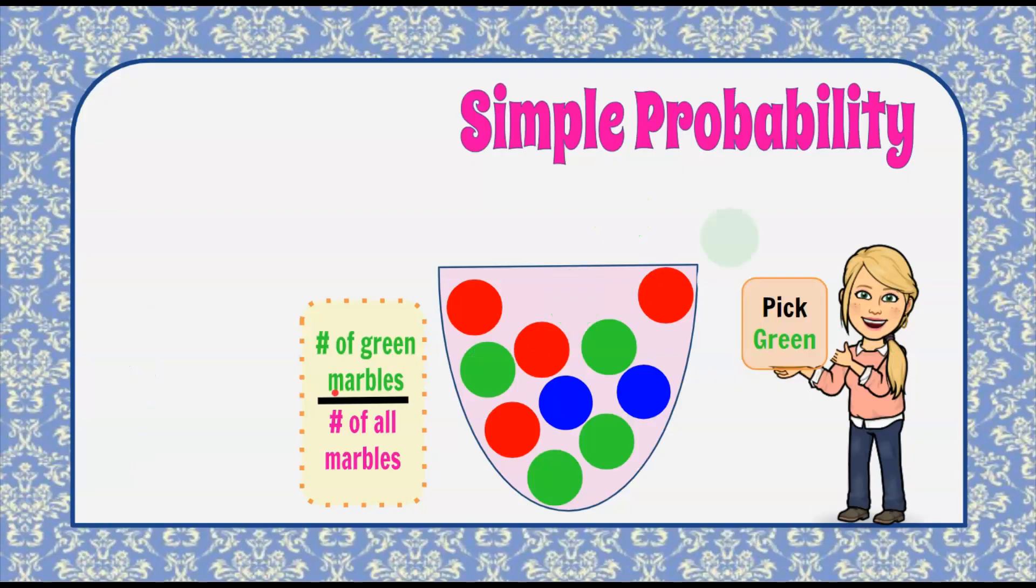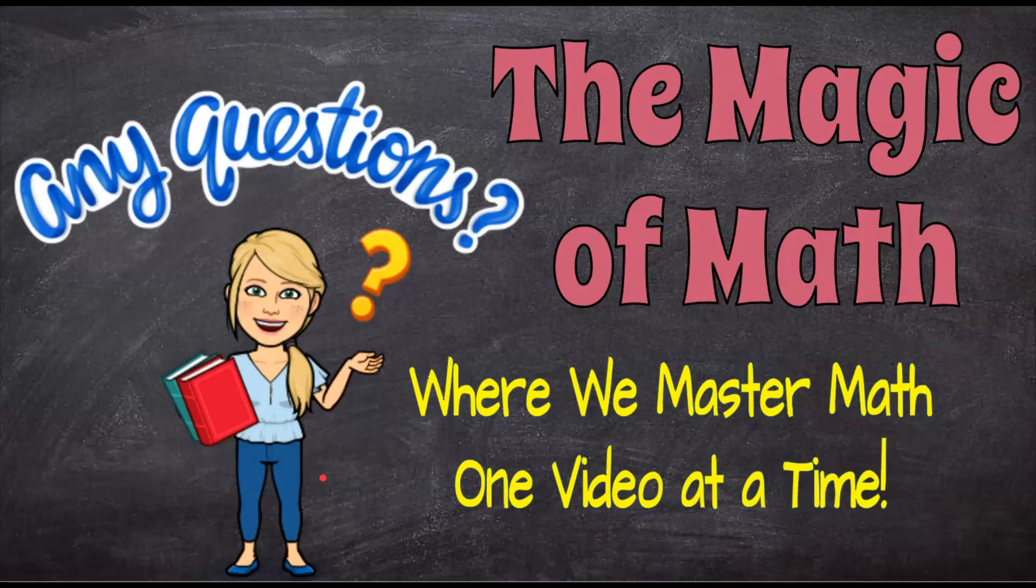So that simple probability has a ratio of desired outcomes to possible outcomes. And thanks for joining me today at The Magic of Math, where we continue to master math one video at a time. I hope you have a great day and come back soon.